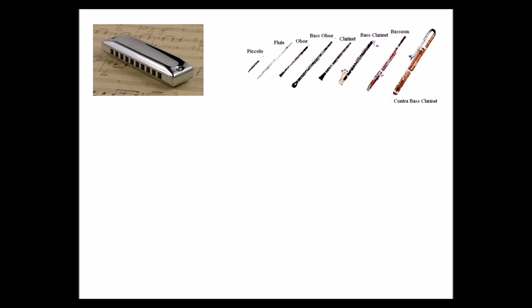Then we have the flute family, which includes your piccolo, your flute, your oboe, bass oboe, clarinet, bass clarinet, and then your bassoon and contrabass clarinet.